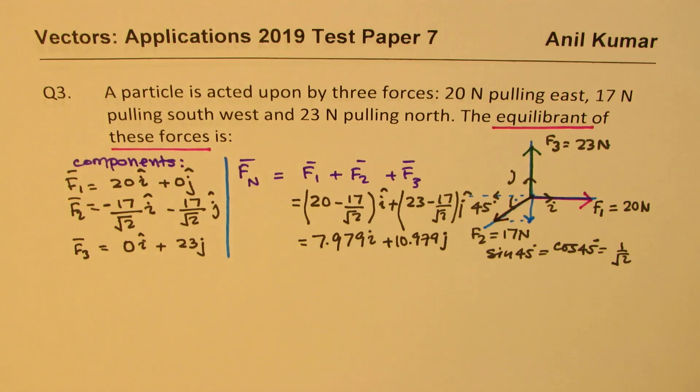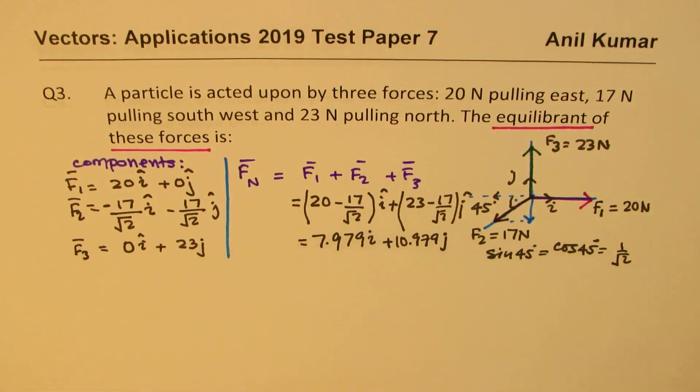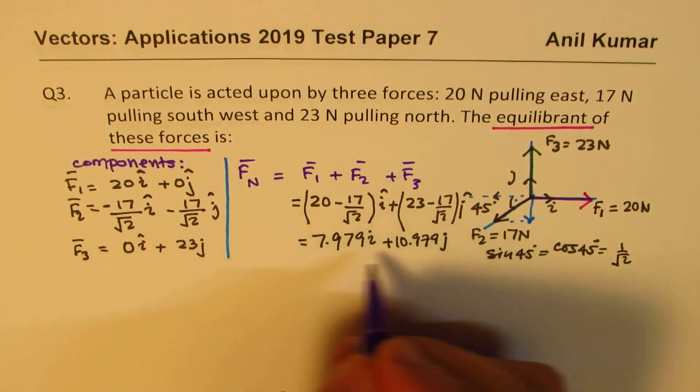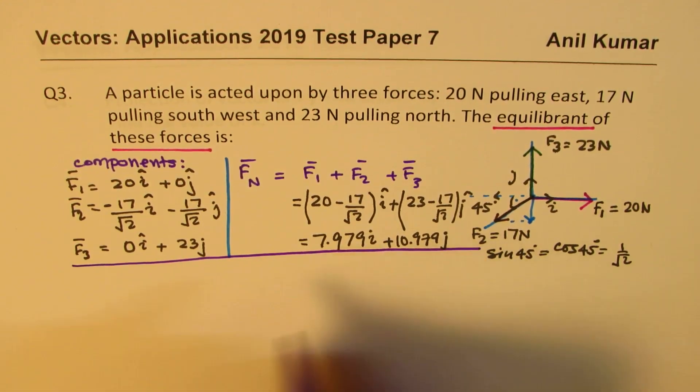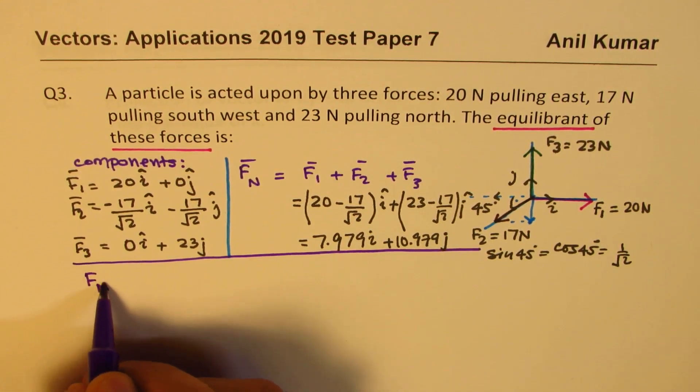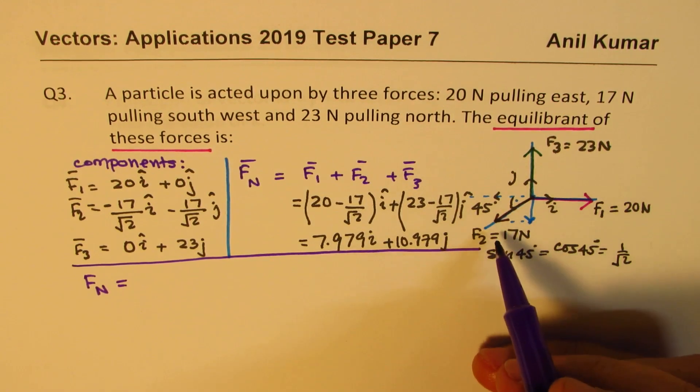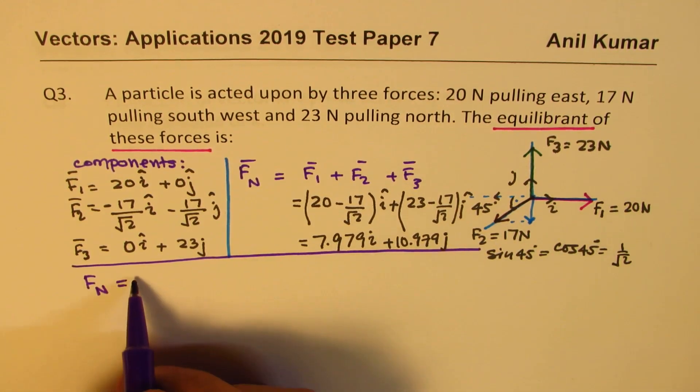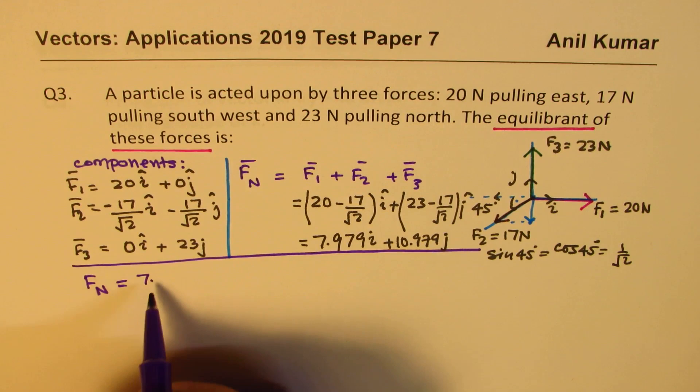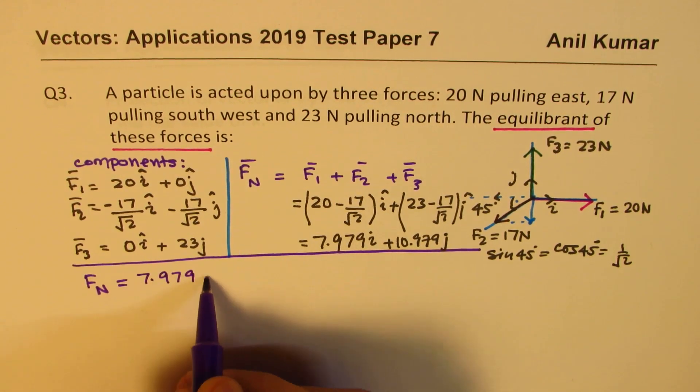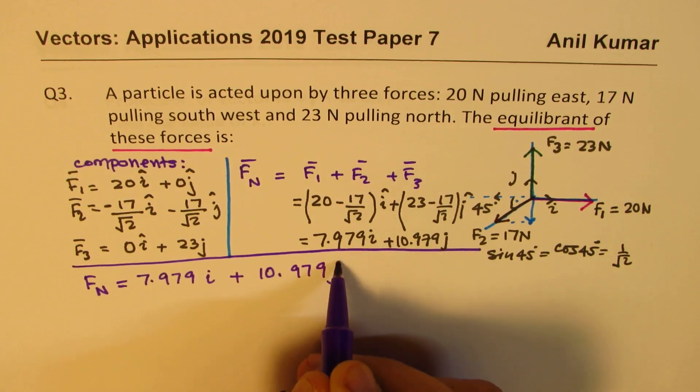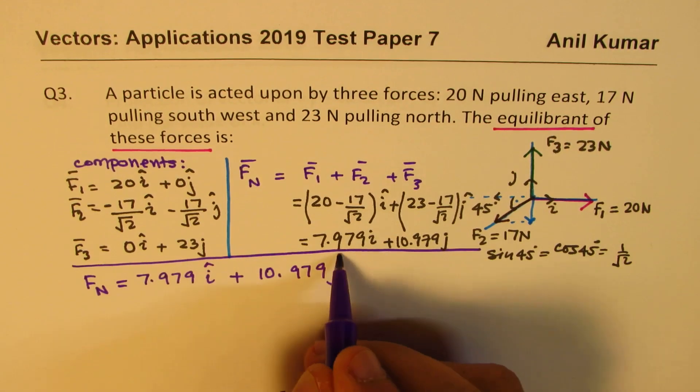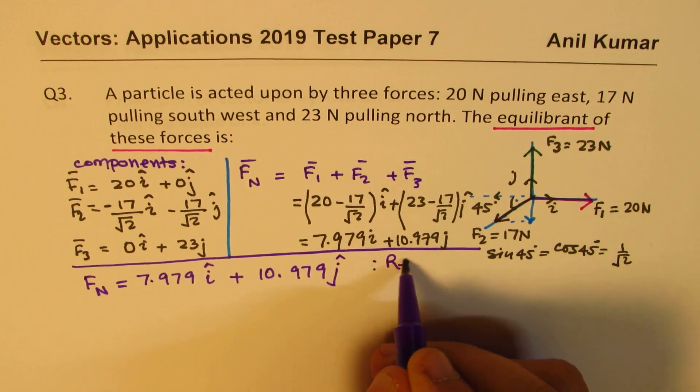So that is your force. Now we could write this also as magnitude and direction. So we got the force now. We say the force, the resultant force is basically 7.979i plus 10.979j. That is our resultant. Now this is basically resultant force.